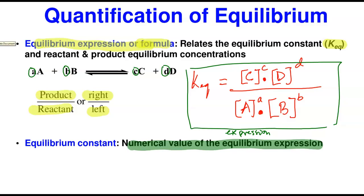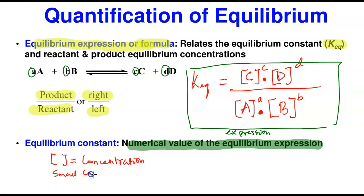This full expression is what we call the equilibrium expression. The square bracket represents the concentration of the species. The lowercase letters represent the coefficients of a balanced reaction — the reaction must be balanced to write a correct equilibrium expression. An important note: equilibrium concentration expressions cannot be written for pure liquids and solids; they can only be written for gases and aqueous solutions.